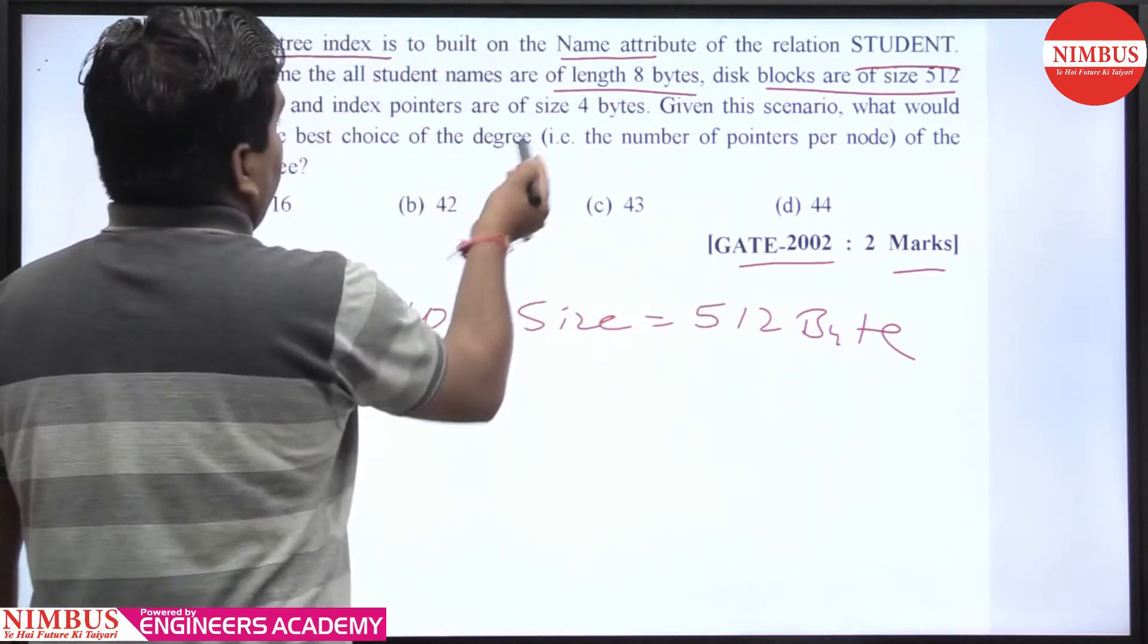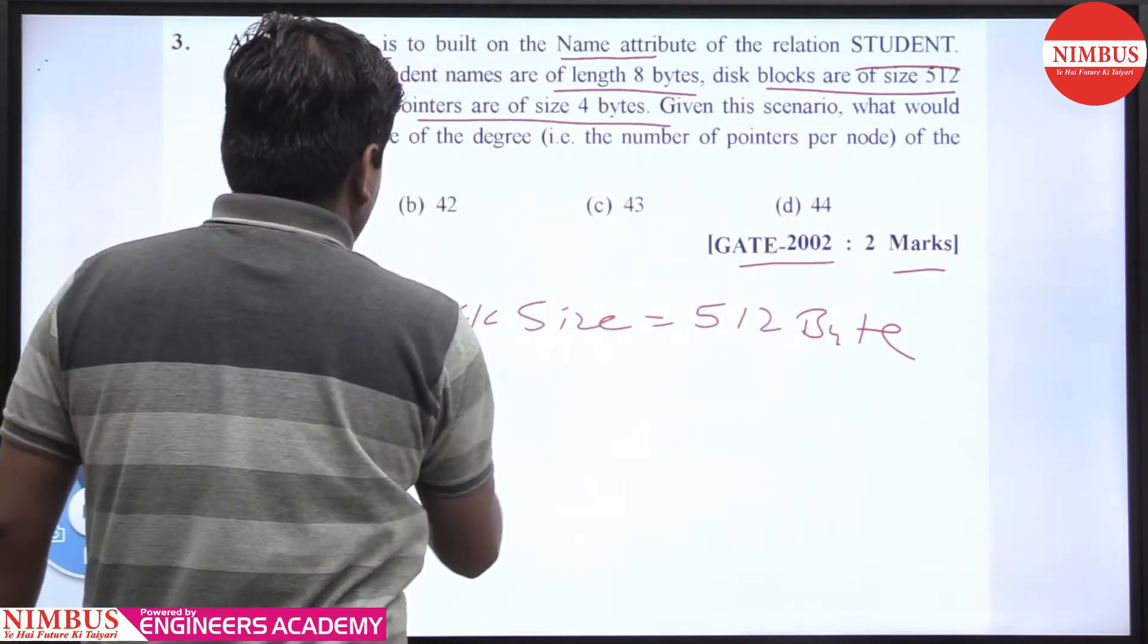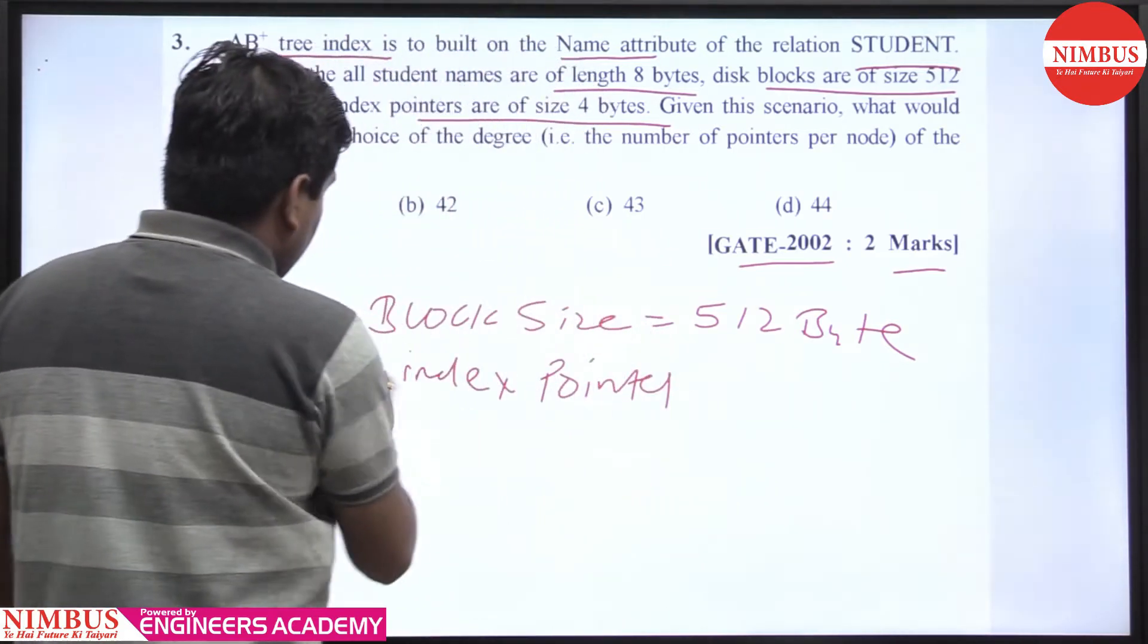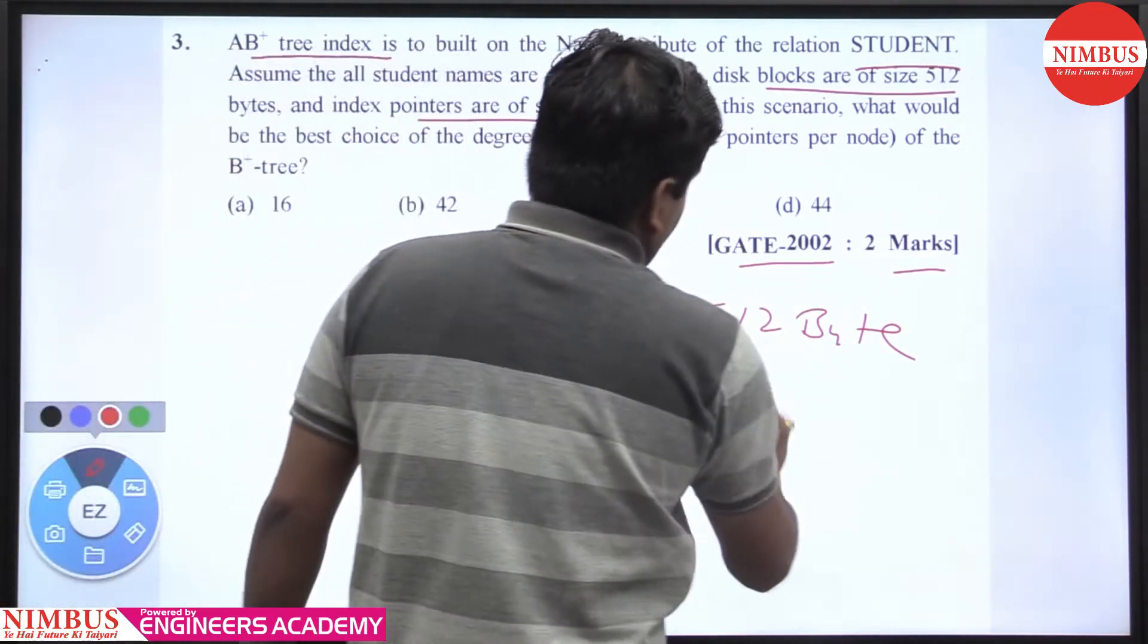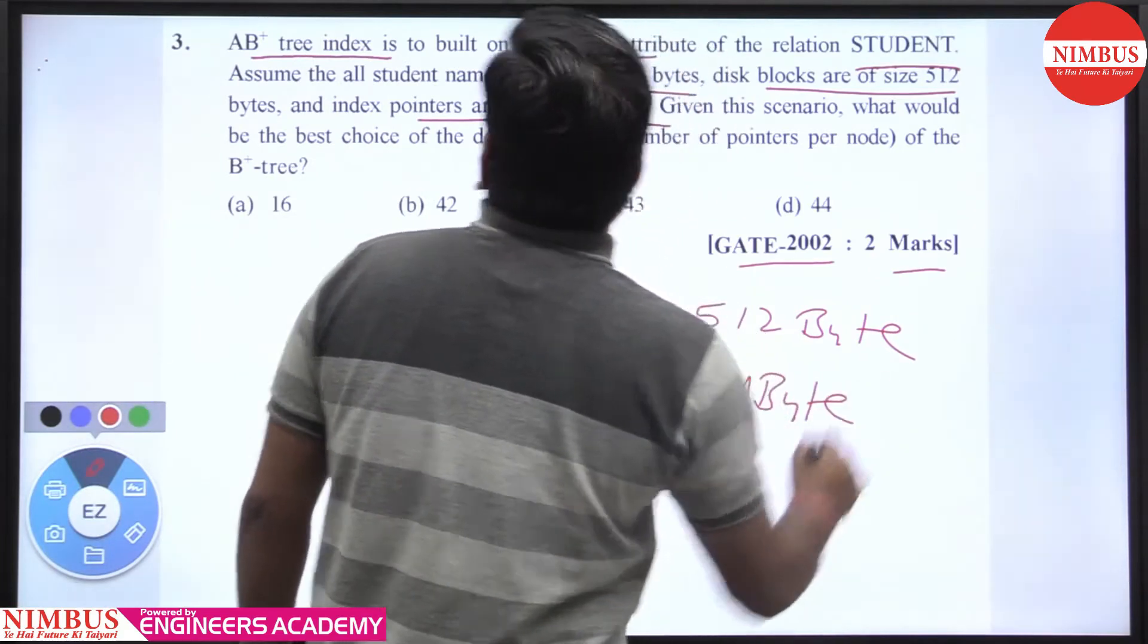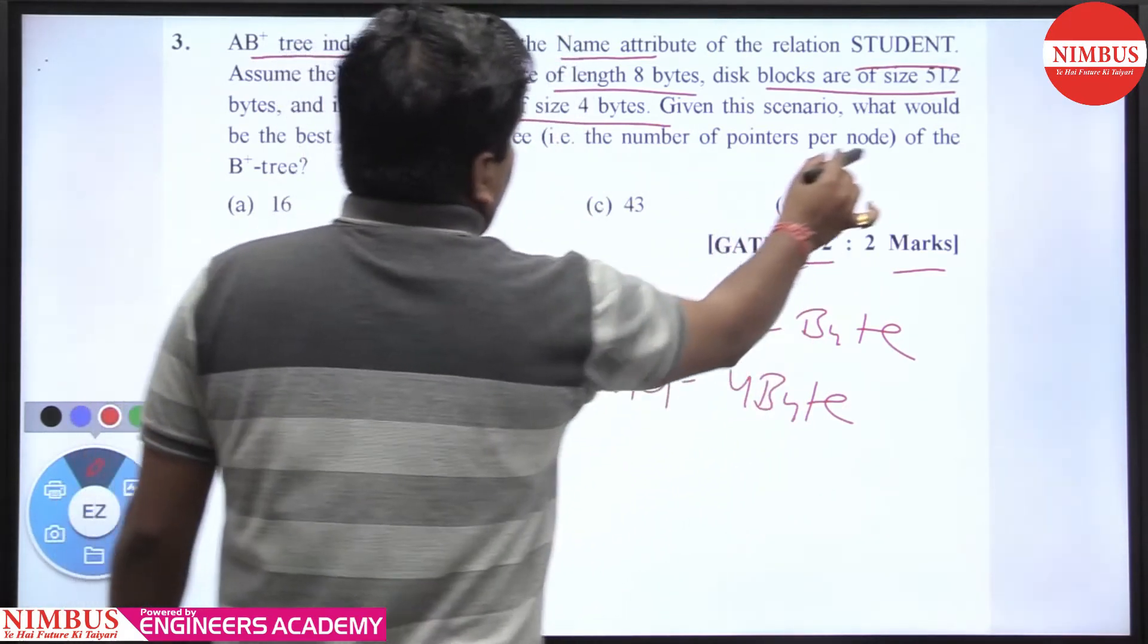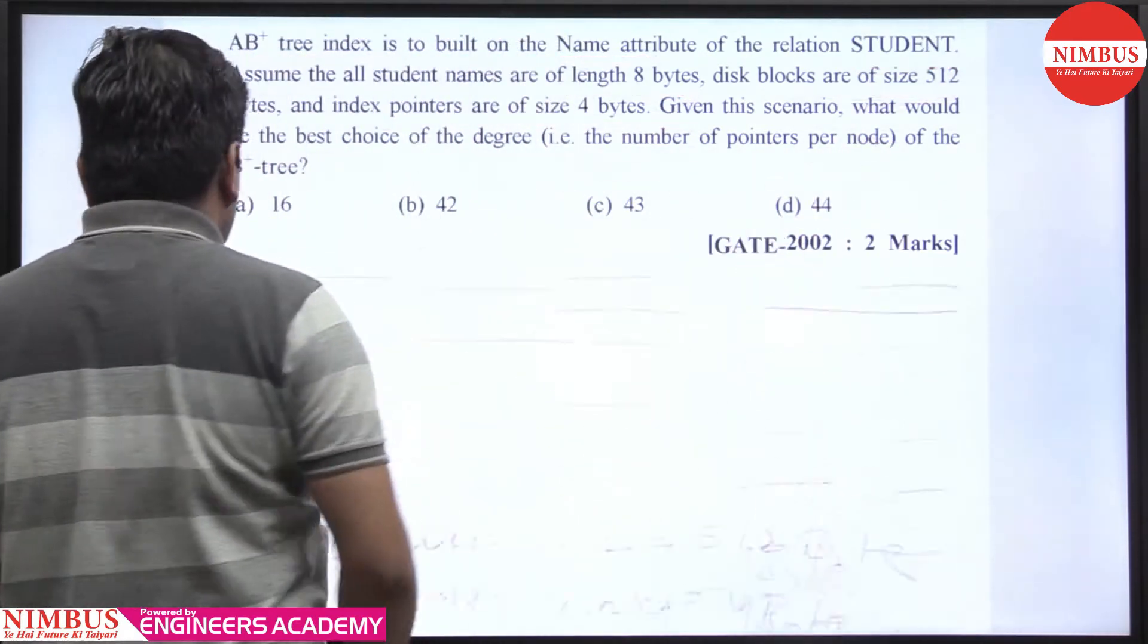Index pointer size is 4 bytes. Here, the index pointer is the block pointer, which has a size of 4 bytes. Given this scenario, what is the degree, the number of pointers per node, of the B+ tree?